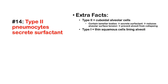Number 14: Type 2 pneumocytes secrete surfactant. Type 2 are the cuboidal alveolar cells containing lamellar bodies. The purpose of surfactant is to reduce alveolar surface tension and prevent alveoli from collapsing. This is essential during breathing — it reduces the surface tension of the thin water layer covering the lung epithelium, preventing alveolar collapse at the end of expiration and reducing the work of breathing. Type 1 pneumocytes are the thin squamous cells lining the alveoli.